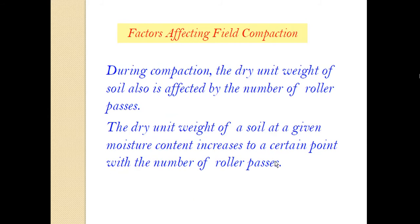During compaction, the dry unit weight of the soil is also affected by the number of roller passes. The dry unit weight of a soil at a given moisture content increases to a certain point with the number of roller passes - that is, when the roller passes over the soil the dry density increases.